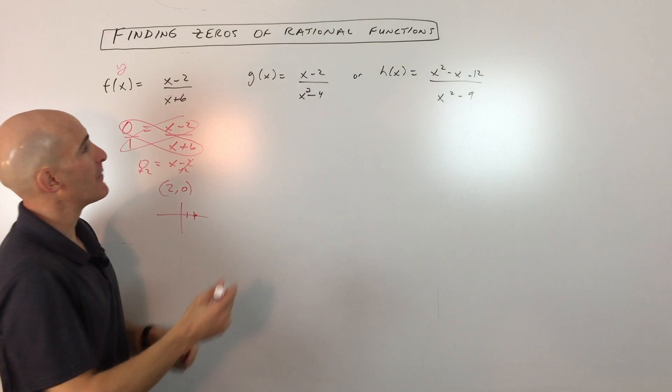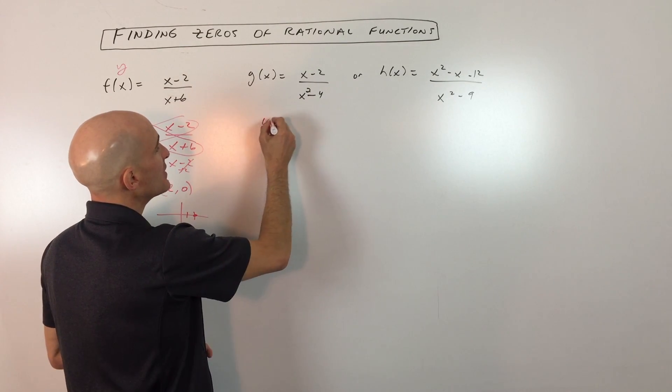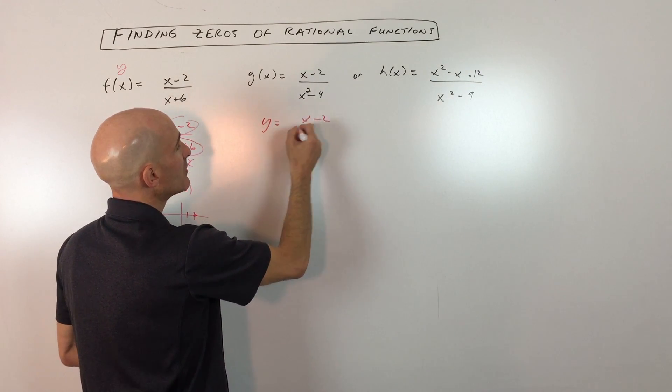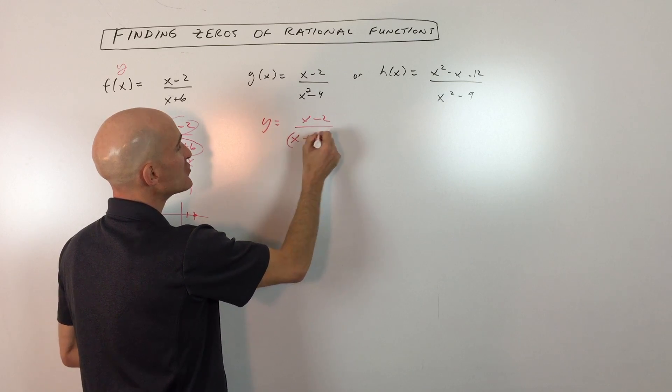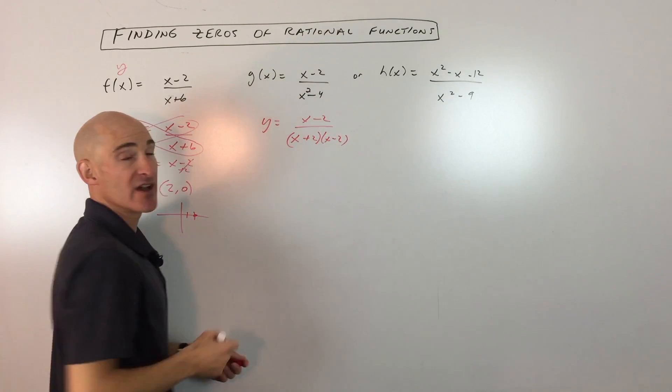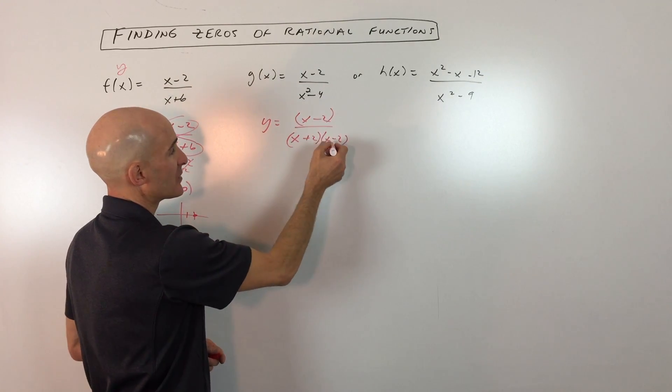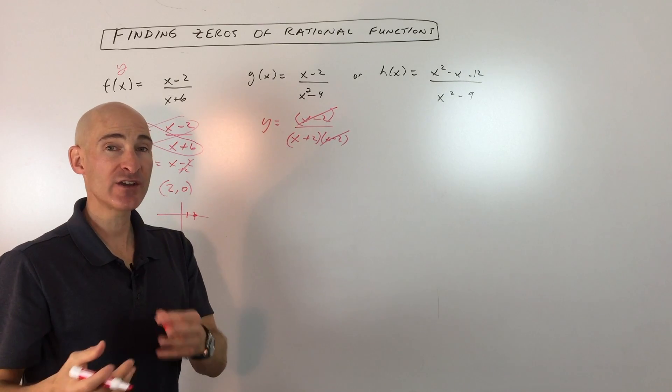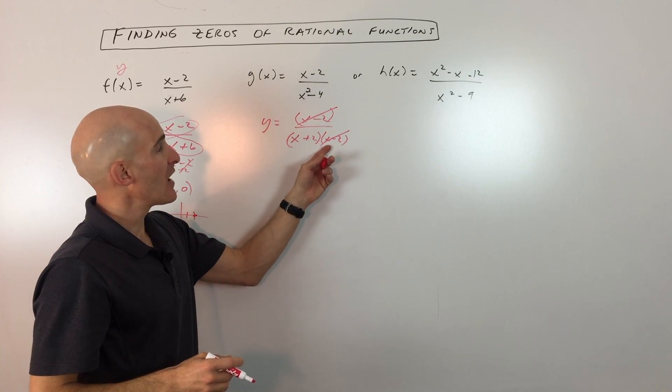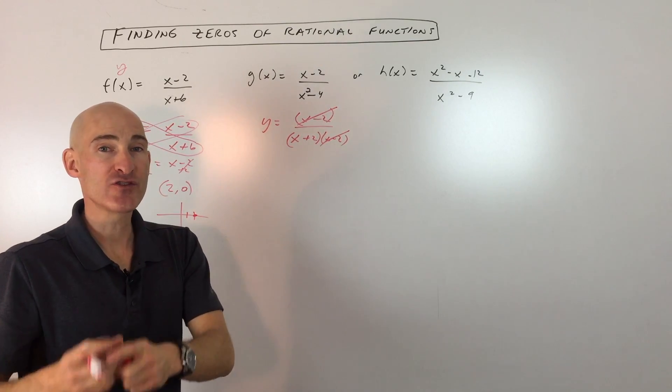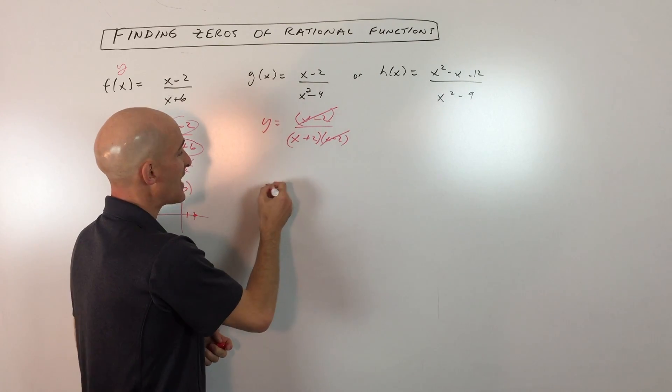Now for the second example, you want to factor the numerator and the denominator as much as you can. The reason is because if you have a factor in the numerator that cancels with a factor in the denominator, like x minus 2, you're not going to actually have a point on your graph at that point, because it's actually